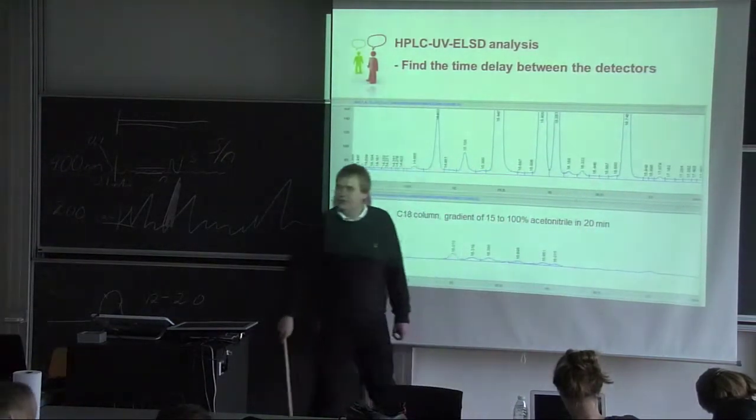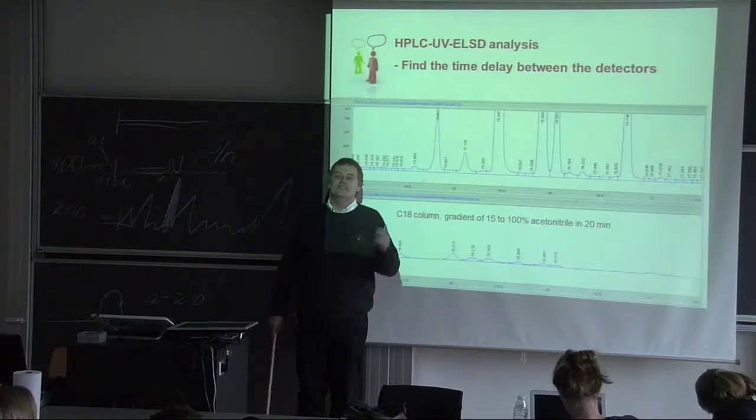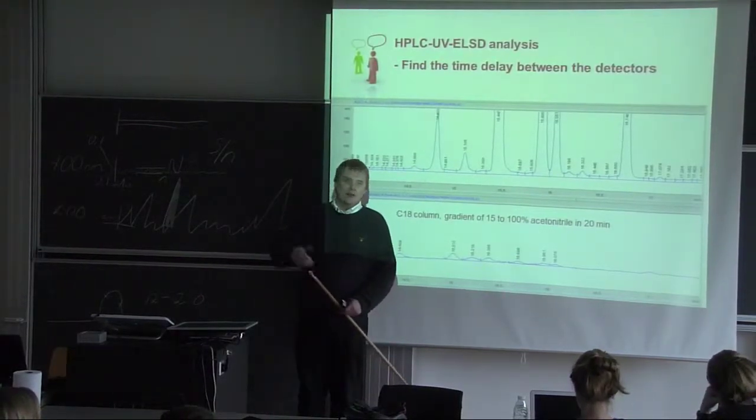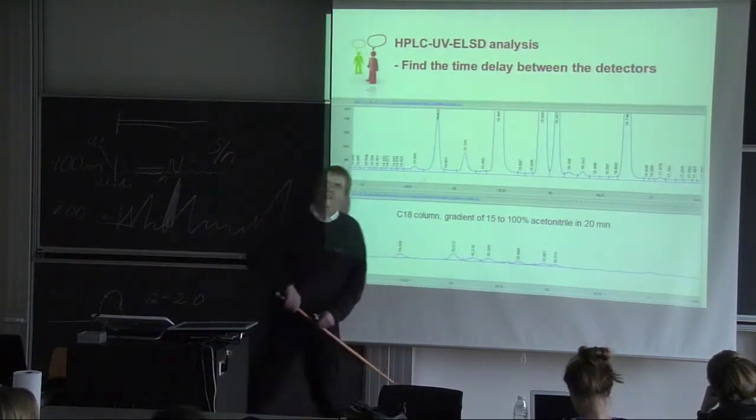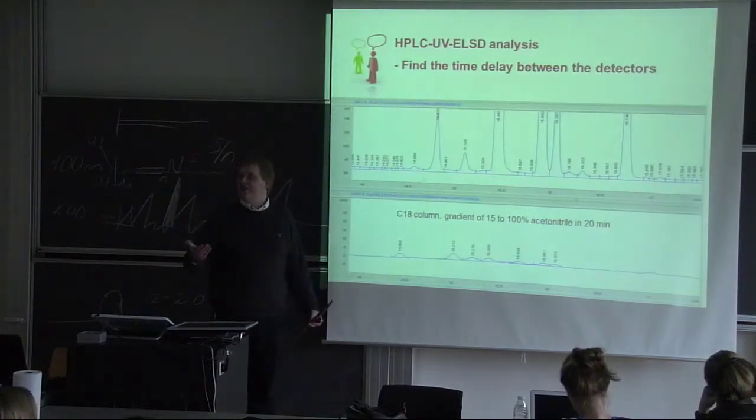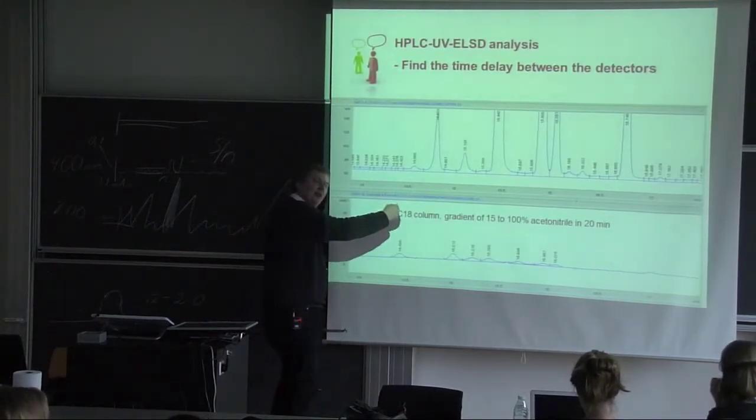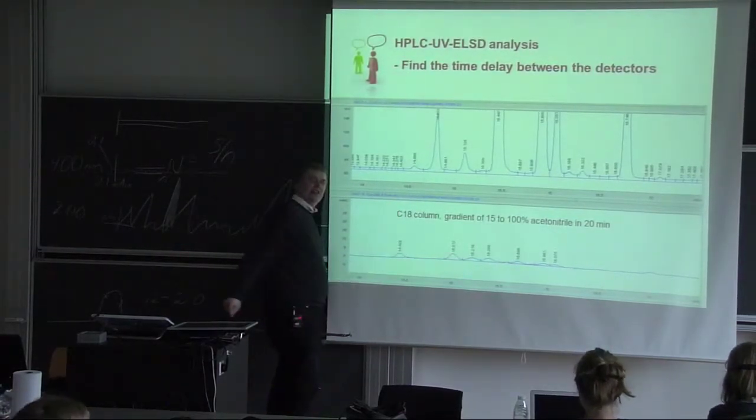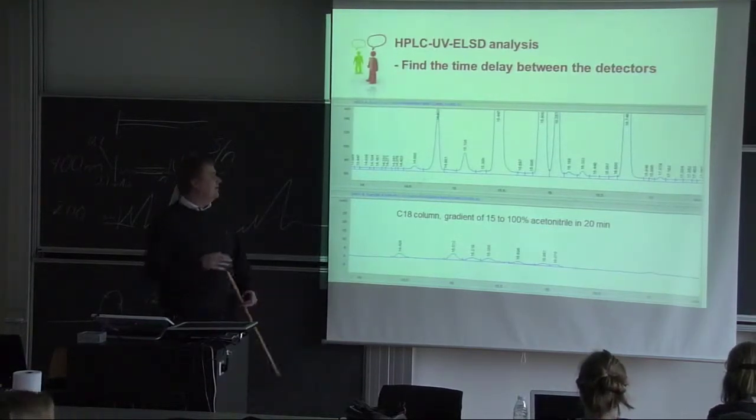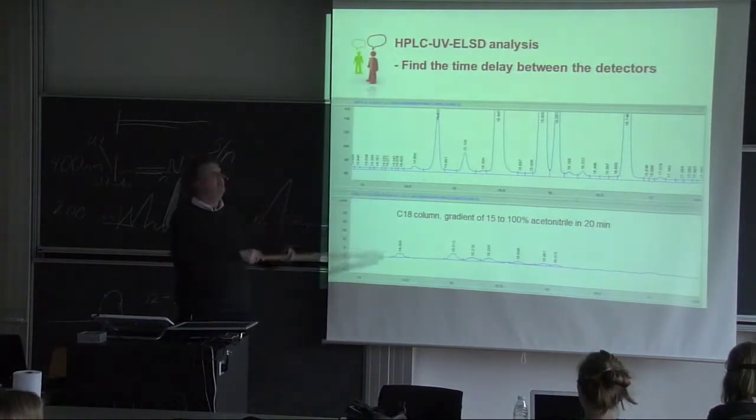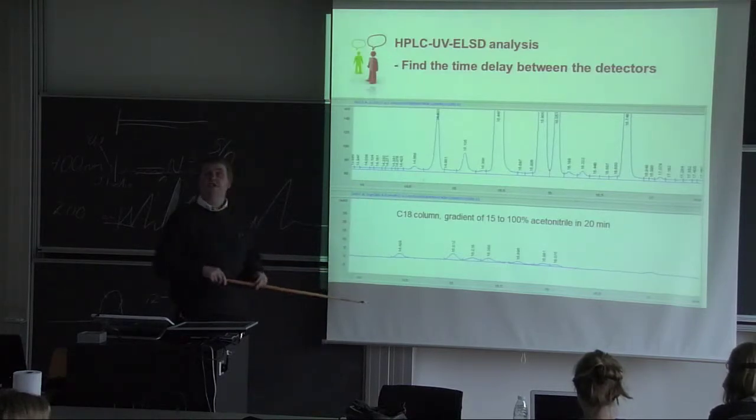So of course, to characterize this, we, of course, don't take a mixture. But a compound, you know, is UV absorbing, and you also think will be seen by evaporative light scattering. And then you characterize that, and that will be a constant time. Because that's only going to be a little bit of peak tubing from one detector to another, and that will have a very low volume, so you should have a very low time delay. In this case, about 0.1 seconds.